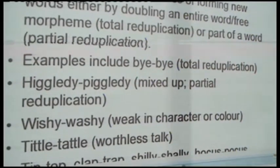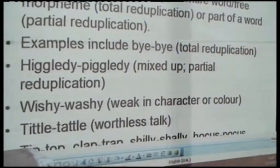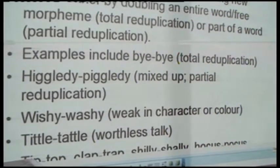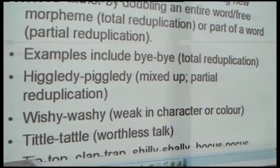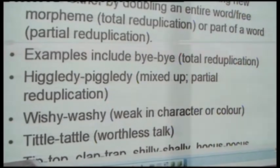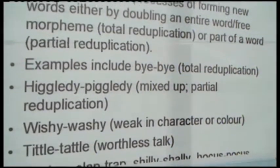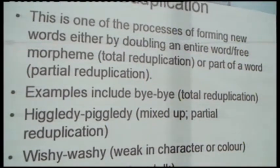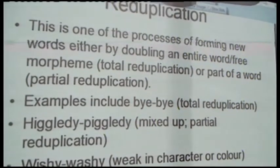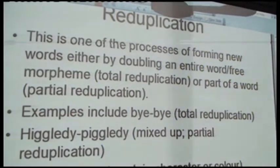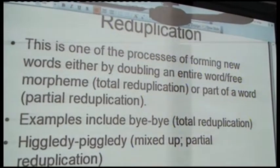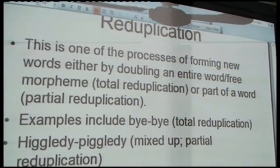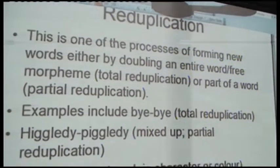Reduplication is a process of forming new words by doubling an entire word or part of that word — total reduplication or partial reduplication. Examples include 'bye-bye,' which is total reduplication. For partial reduplication, you have 'helter-skelter' — meaning mixed up — 'wishy-washy,' 'tittle-tattle,' and so on.